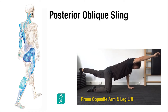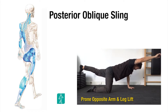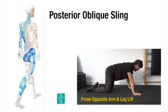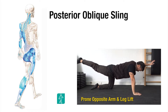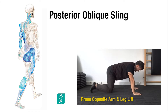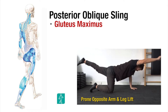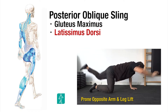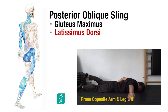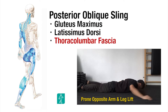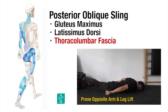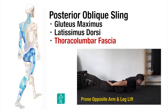The posterior oblique sling provides force closure to the sacroiliac joint, and consists of the gluteus maximus, the contralateral latissimus dorsi, with the interconnecting thoracolumbar fascia.